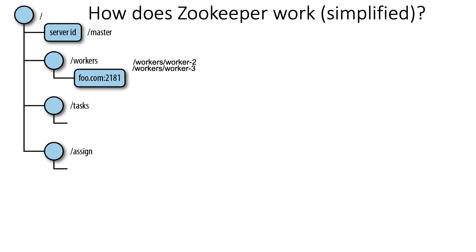How does Zookeeper work? Zookeeper is kind of like a distributed file system — more sophisticated than a typical file system because it's distributed, and allows you to do specific things like set blocks and get notifications of changes that you can't do with a typical file system. In this example, we have a master node, workers, tasks, and an assignment section. Think of it like subdirectories in a file system, where workers have registered themselves.